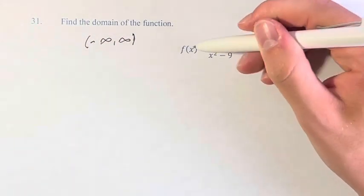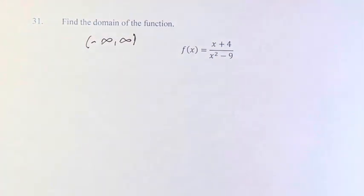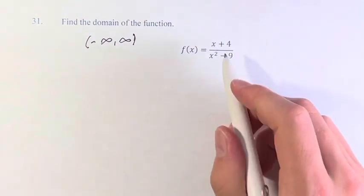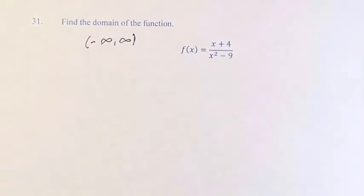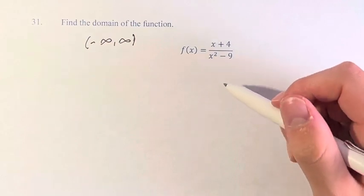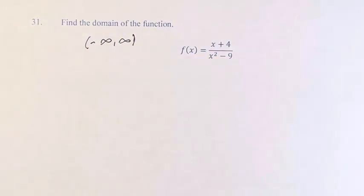But in this function, f of x equals x plus 4 over x squared minus 9, the only way that we would have a value that is not inputable into the function is if the denominator was equal to 0. Because if the denominator is equal to 0, then you're dividing by 0, and you're getting an undefined value.